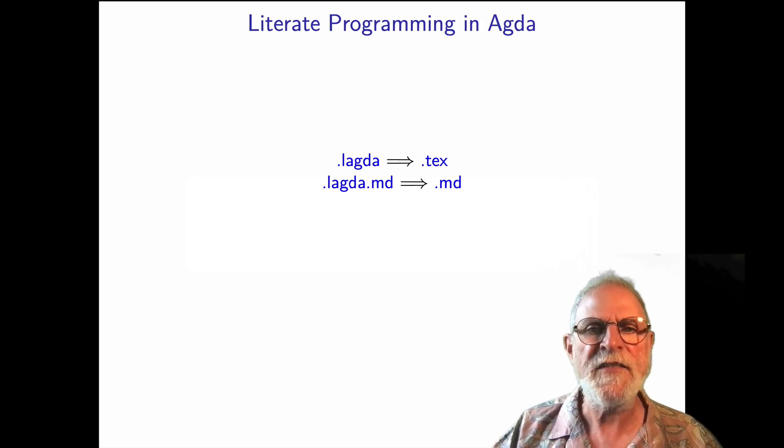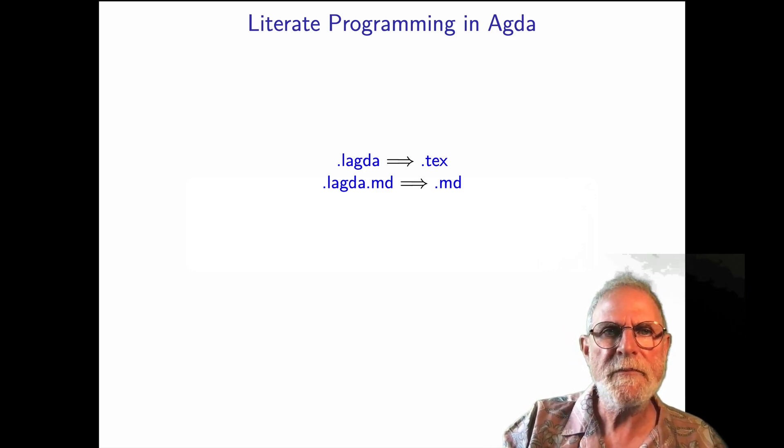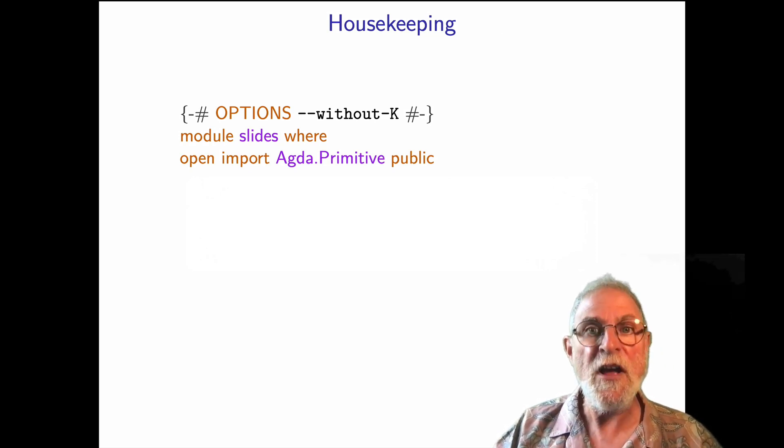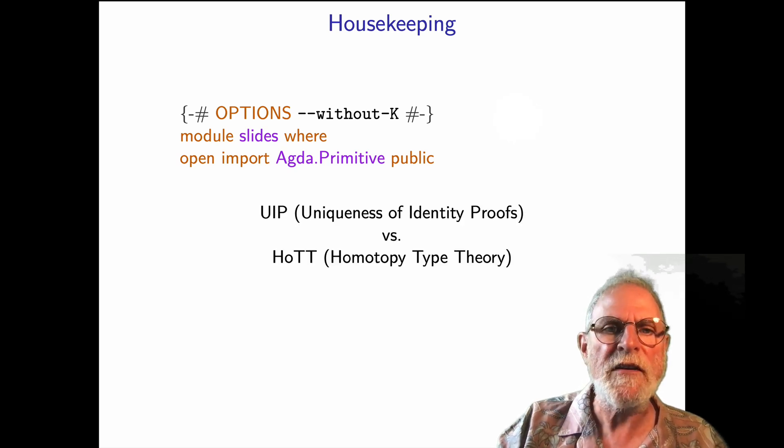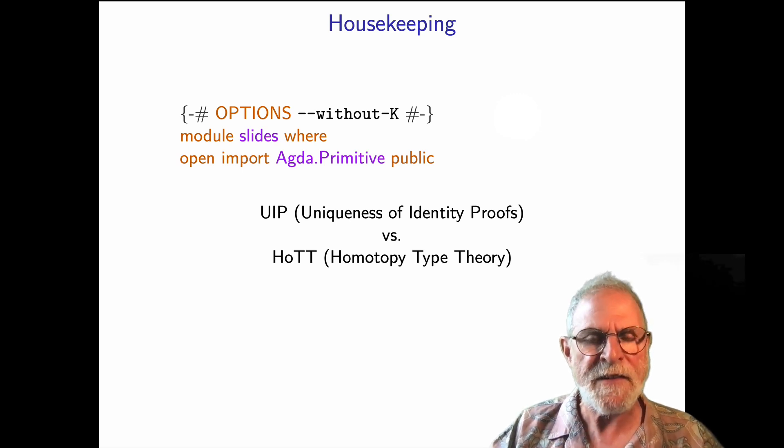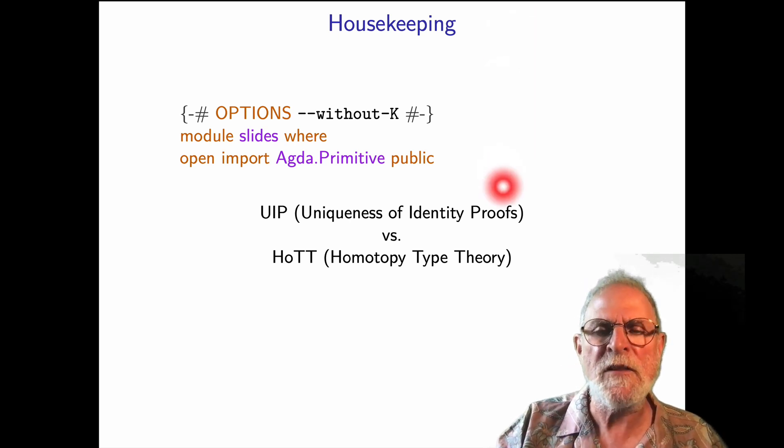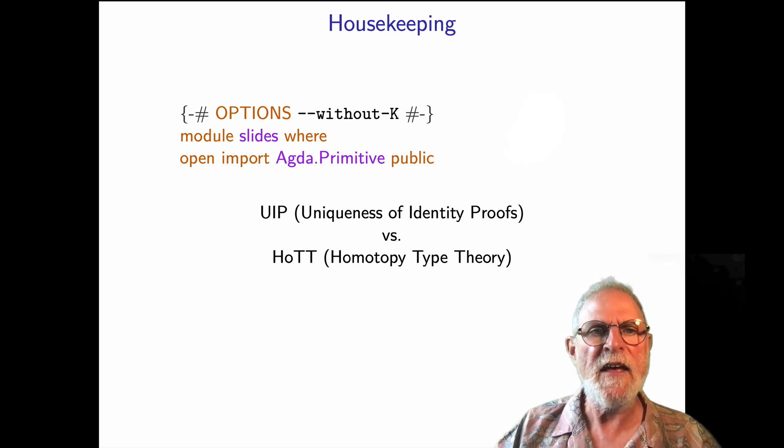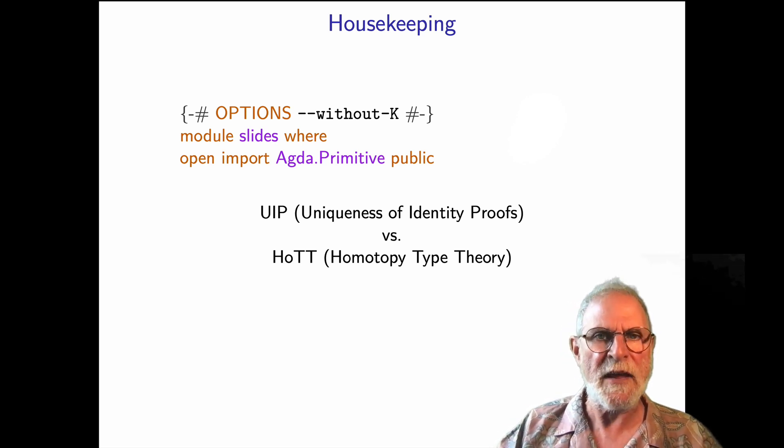So that's literate programming in Agda. What this means is if you have a .lagda extension on your file, Agda will convert that to tex. If you have lagda.md, Agda will convert that to markdown, which is how the textbook PLFA was done. Now, when you do literate Agda, I strongly encourage you to publish everything. So in this paper, we've published everything, even this little pragma at the beginning, which is a technical point, which is that we're not using uniqueness of identity proofs, which means that everything that's done here is compatible with homotopy type theory, where you might have more than one proof that two things are equal.